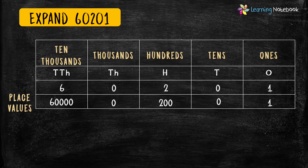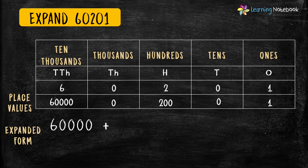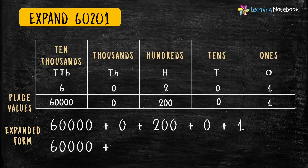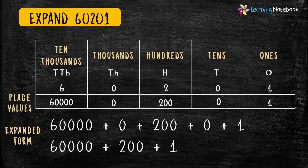Now students, let's write the expanded form of this five-digit number. It would be 60,000 plus 0 plus 200 plus 0 plus 1. Or we can also write it as 60,000 plus 200 plus 1. Both these ways are correct.